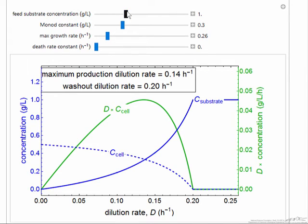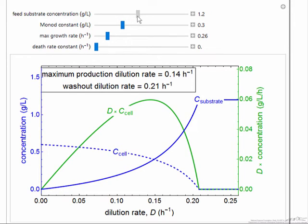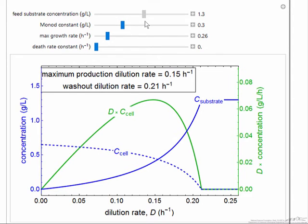If I increase the feed substrate concentration, notice that the scale on the left changes and increases, and the scale on the right increases. More feed substrate means faster production.